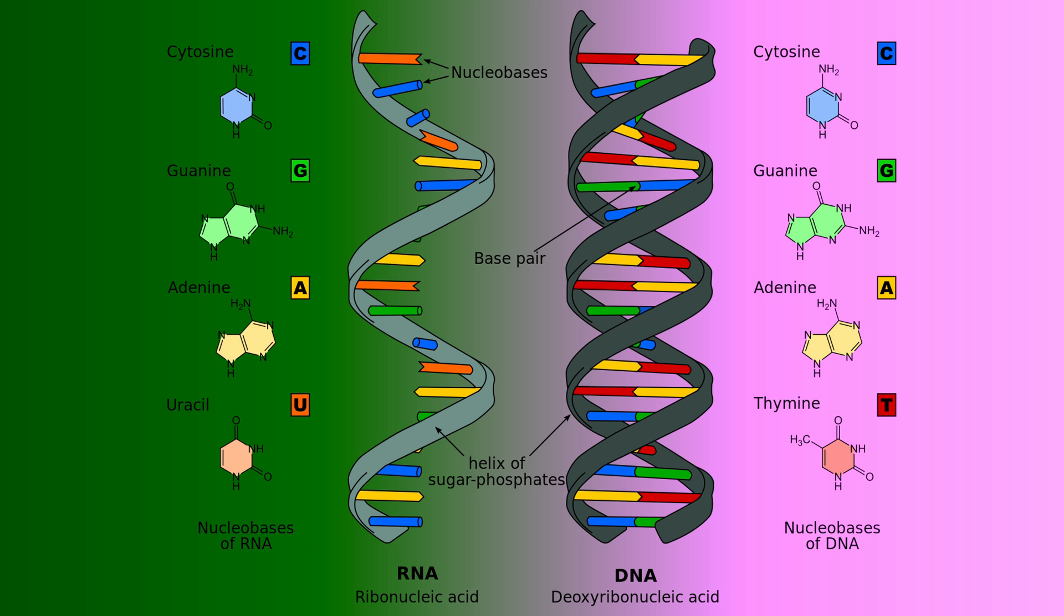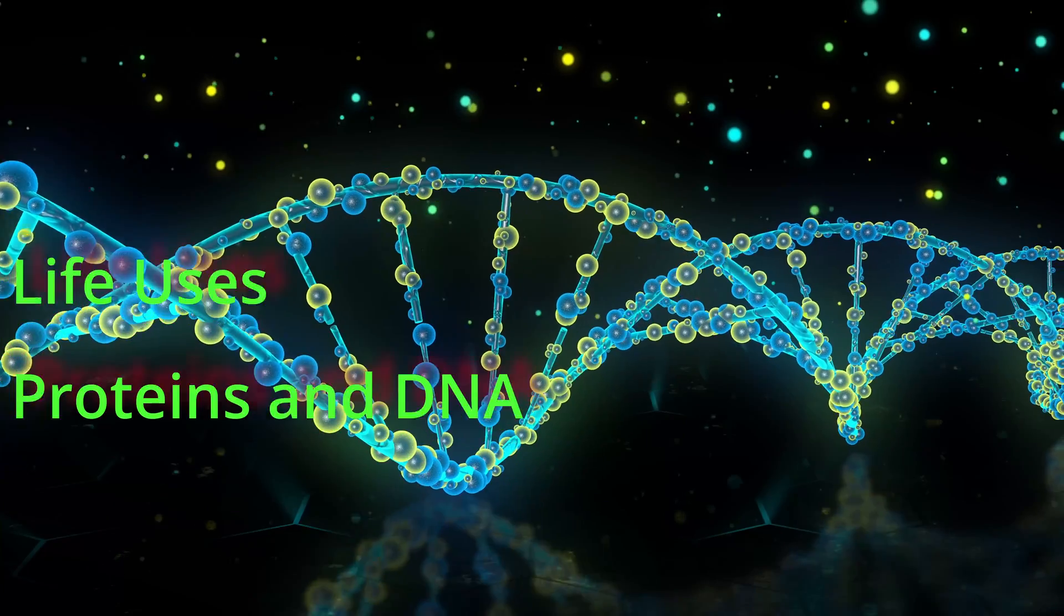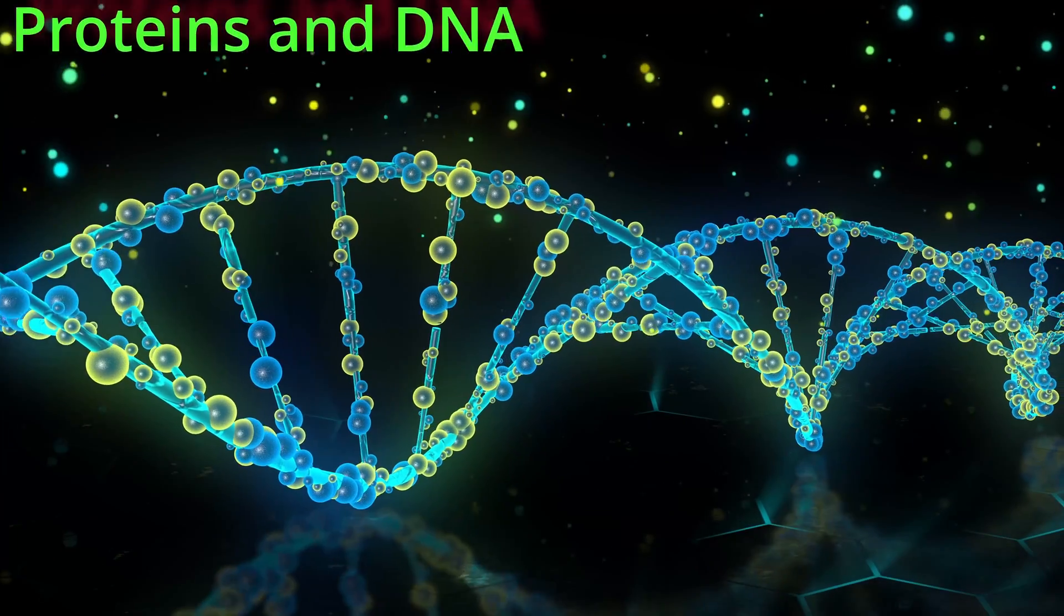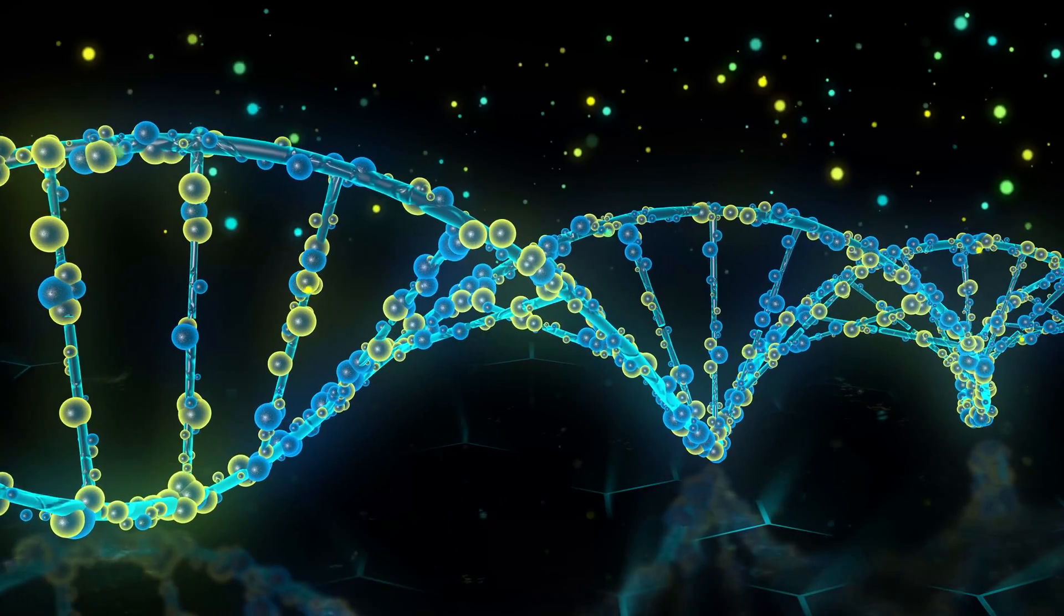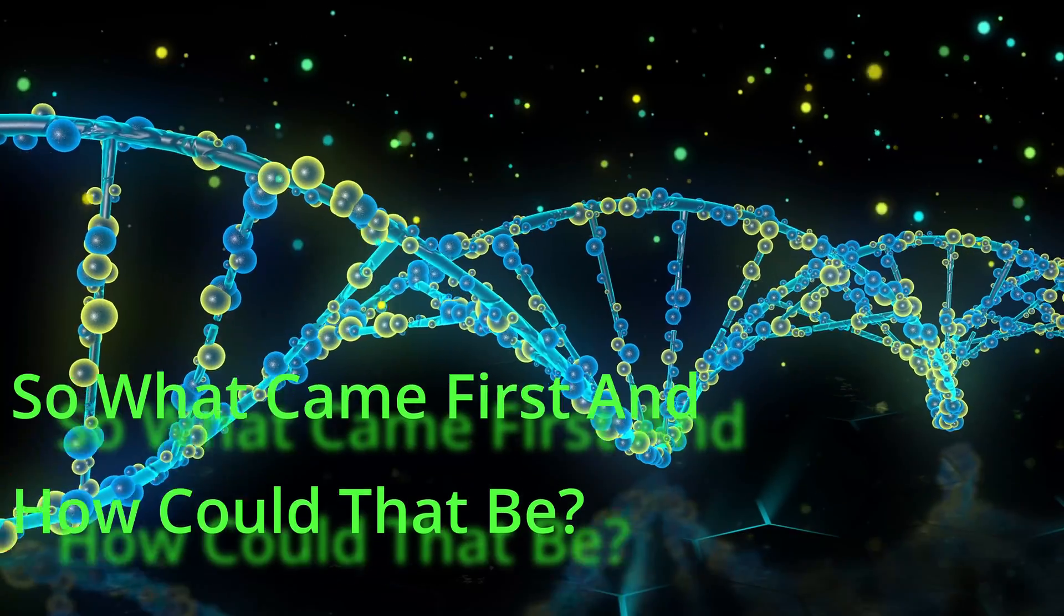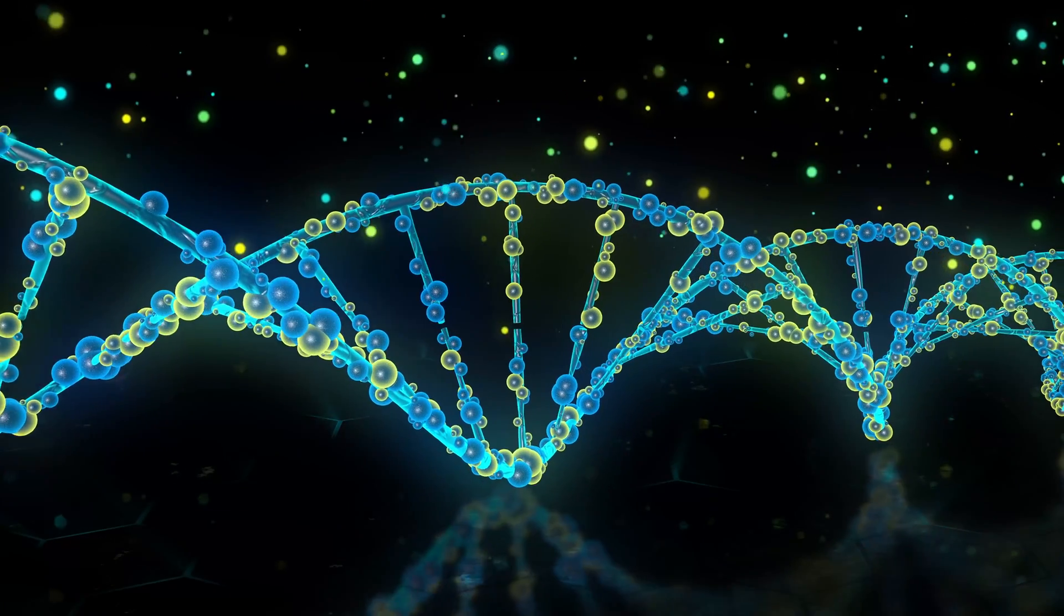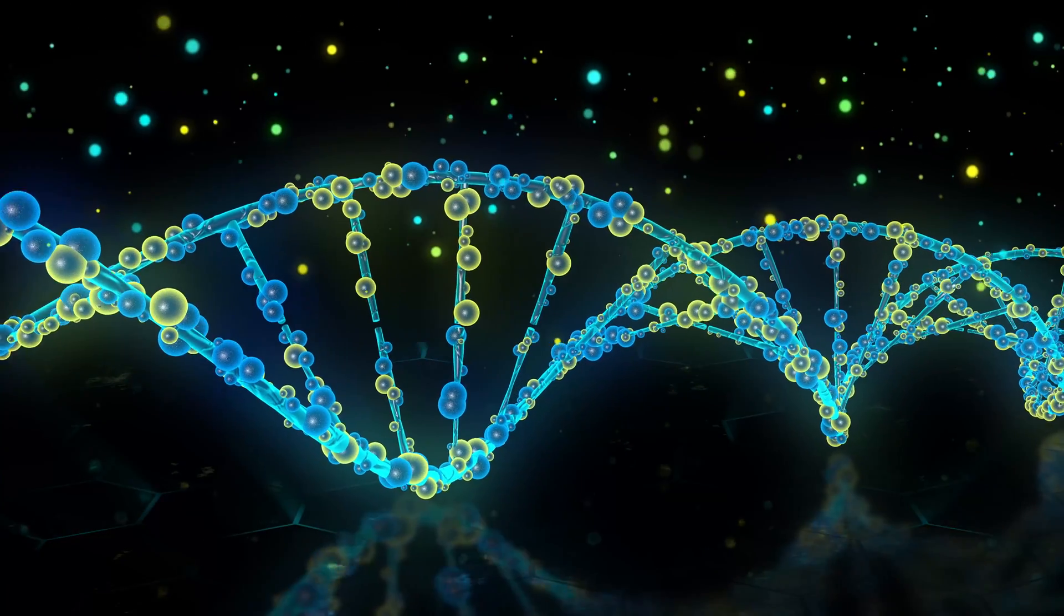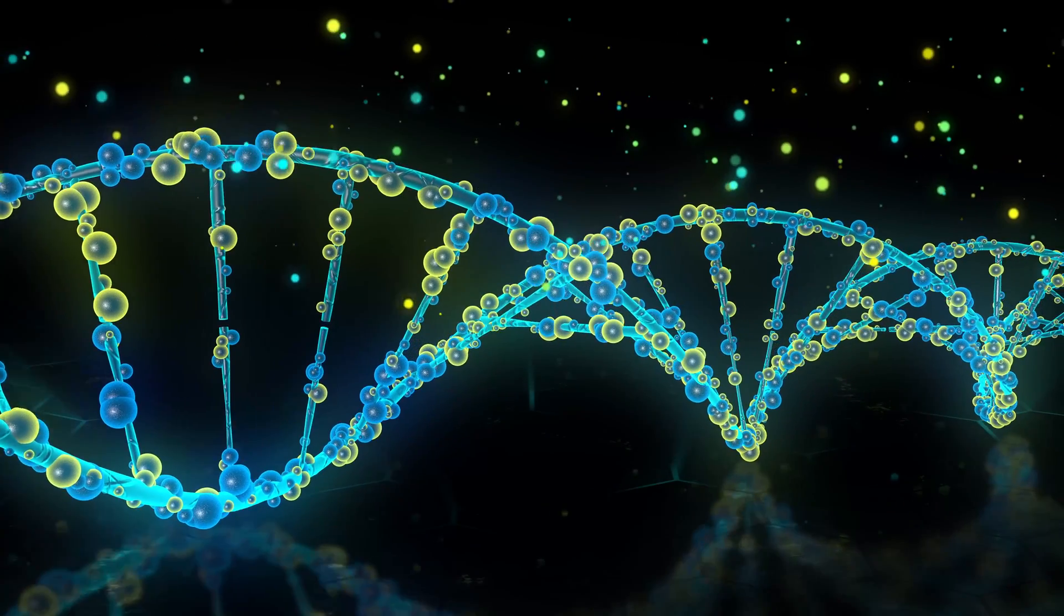One of the problems of the origins of life is that the process that life currently uses to reproduce requires two distinct components, namely proteins and DNA. The DNA has the information to make more of the life form, but in order to build DNA, you need proteins. So it's a chicken and egg problem. What came first? The protein, which requires the code of the DNA to be properly built, or the DNA, which requires the proteins to even be assembled?